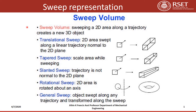The different types of sweep representations are: translational sweep, tapered sweep, slanted sweep, rotational sweep, and general sweep. In translational sweep, a 2D area is swept along a linear trajectory normal to the 2D plane, producing a regular shape.